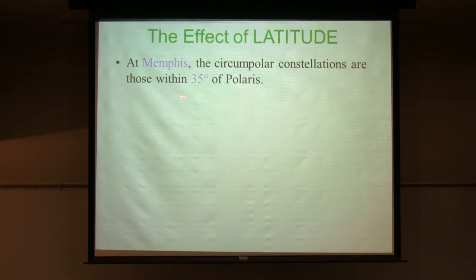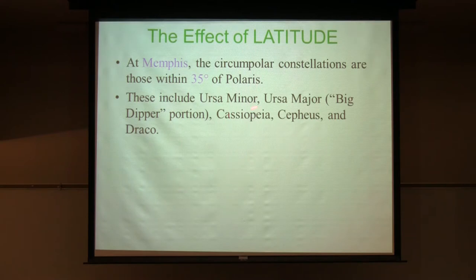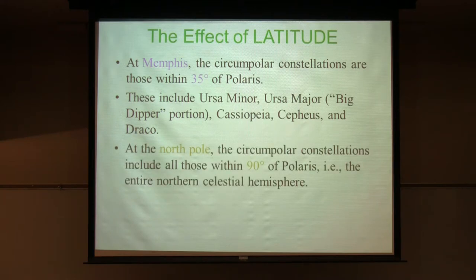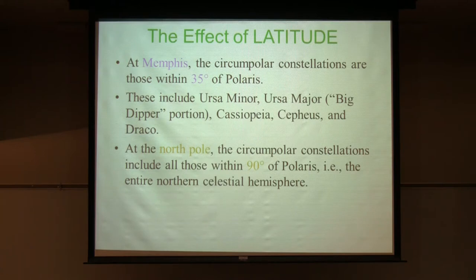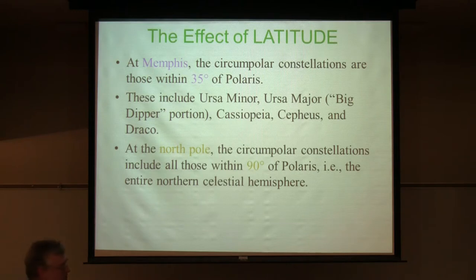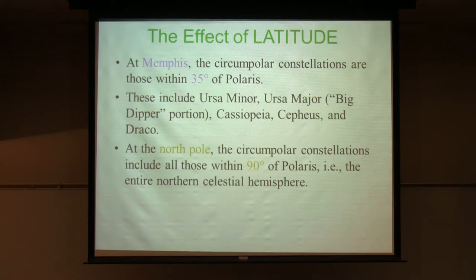Circumpolar constellations from here are those within 35 degrees of Polaris: Ursa Minor, the Big Dipper portion of Ursa Major, Cassiopeia, Cepheus, and Draco. At the North Pole, all the constellations you can see are circumpolar — the north star is straight overhead, everything that's above the horizon stays above the horizon and just moves in circles parallel to the ground. The whole northern half of the sky is circumpolar at the North Pole; the other half you never see.